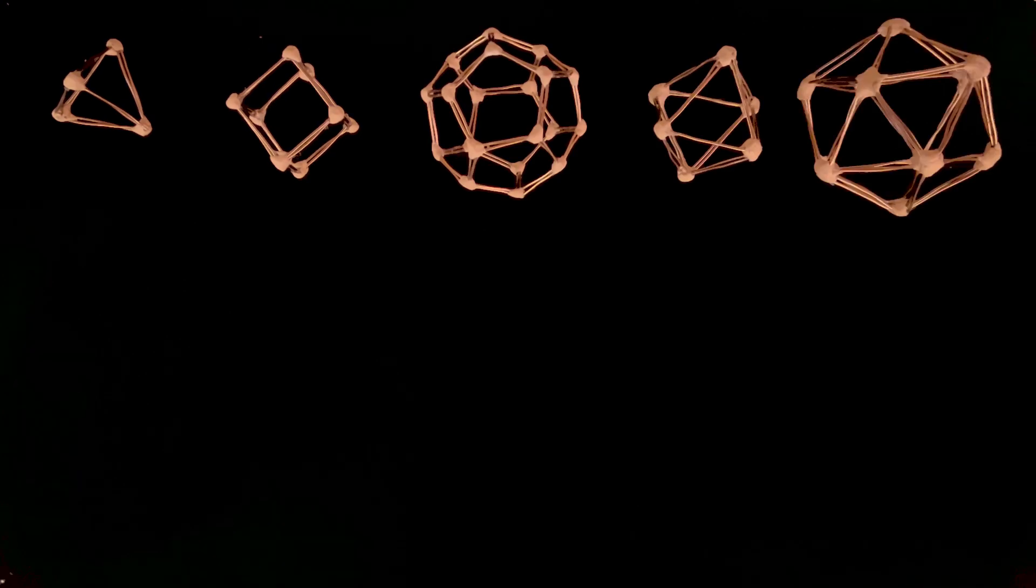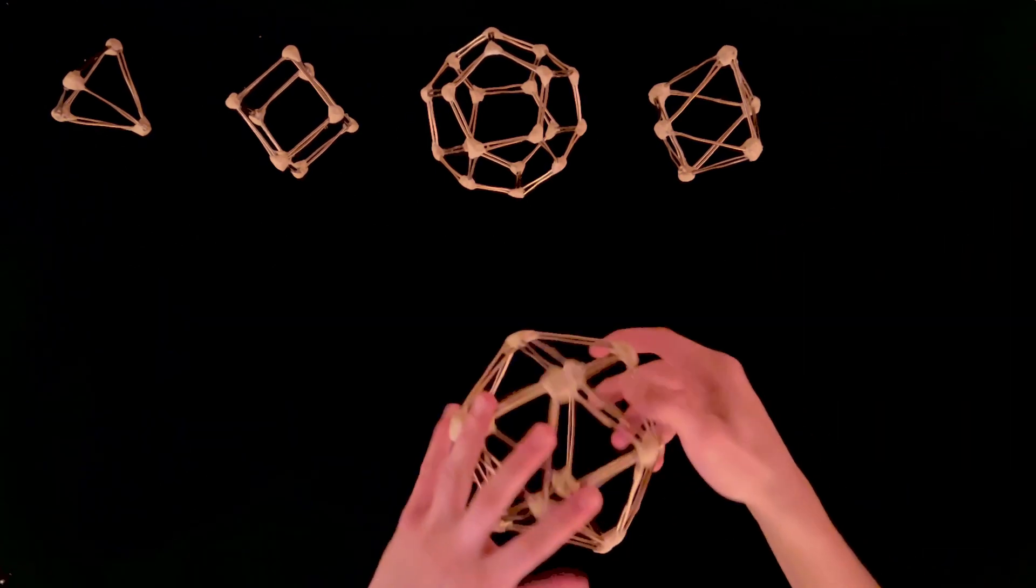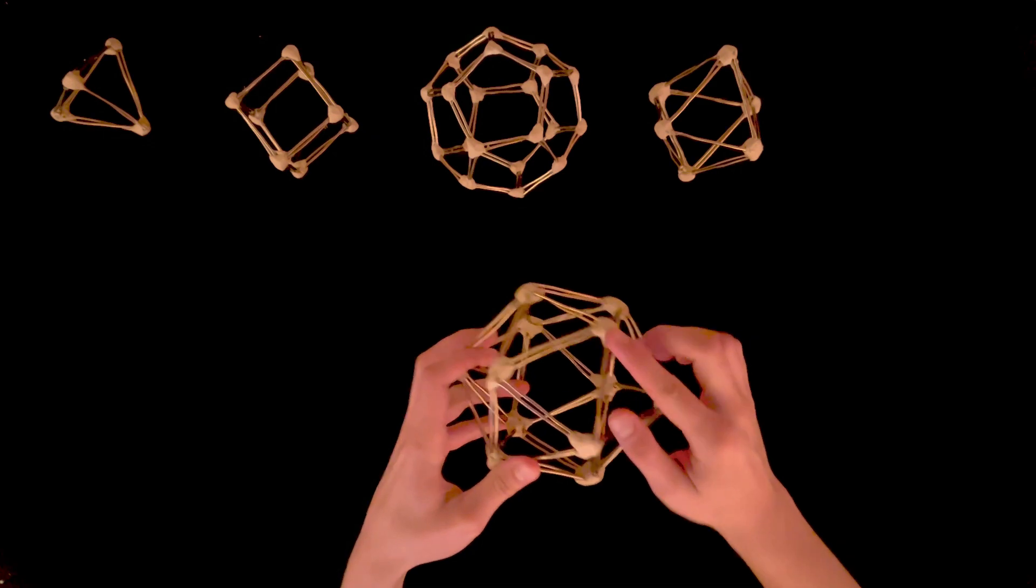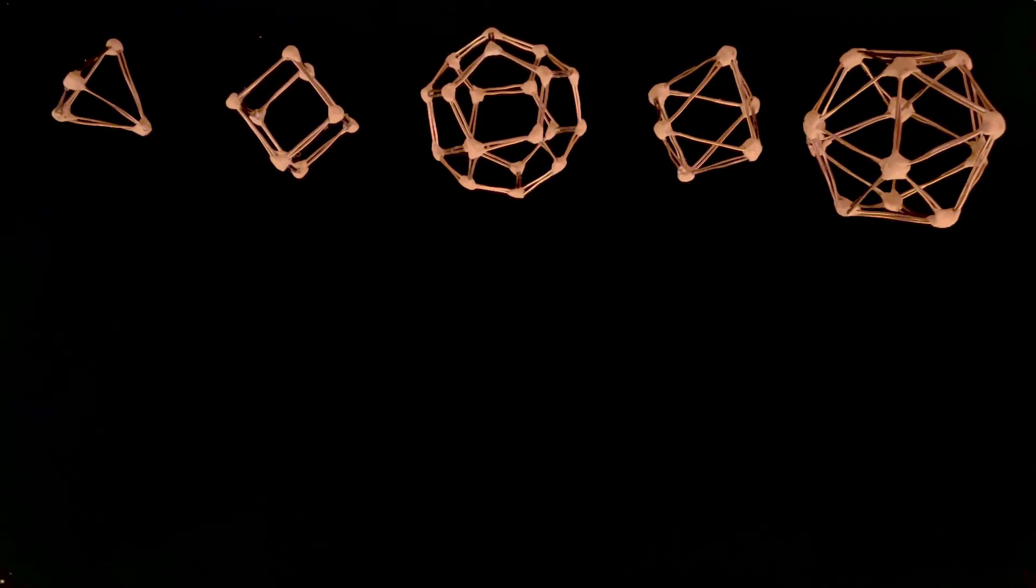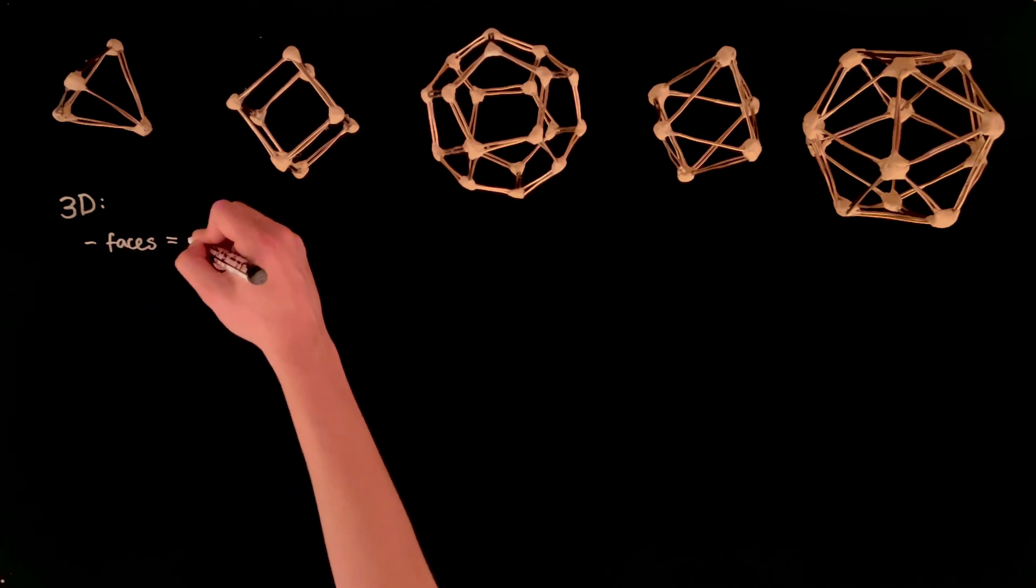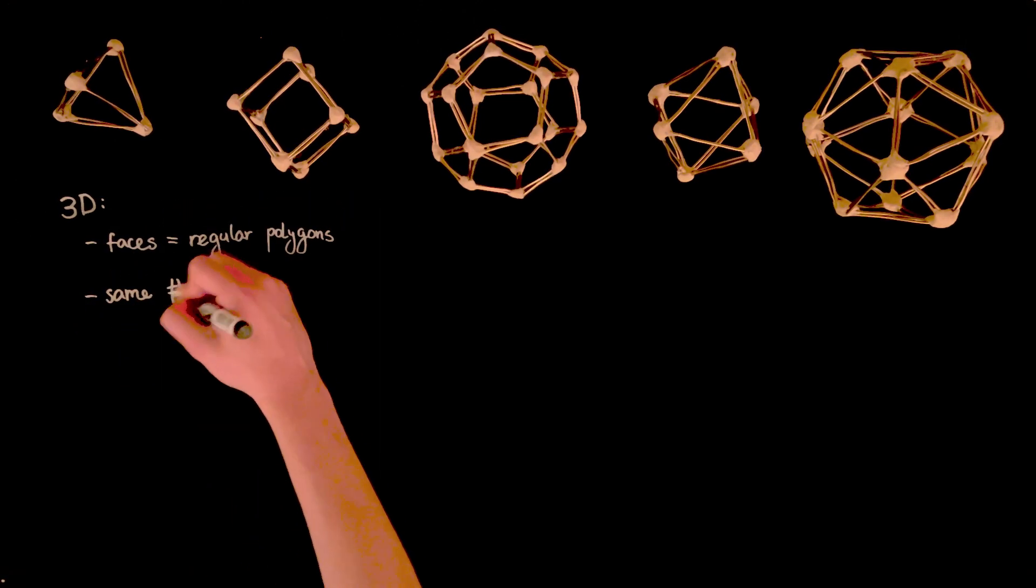Before venturing into the fourth dimension, let's remind ourselves of the 3D platonic solids. Feel free to skip this section if you're familiar with their construction. What makes these polyhedra so regular? Given an extra-symmetric shape, you shouldn't be able to distinguish any of its vertices, edges, or faces. To ensure this, we make platonic solids out of identical regular polygons, with the same number meeting at each vertex.